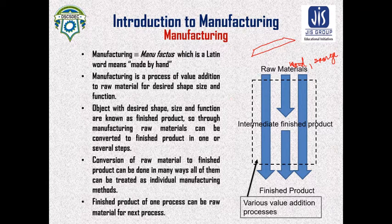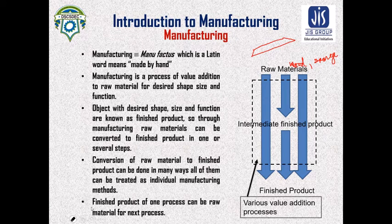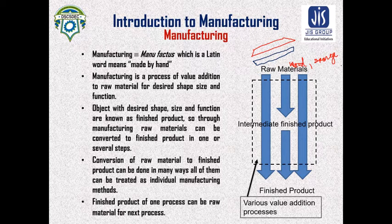This is the wooden part, and this is the spongy part. Both the sponge and wooden parts are first made separately — from wood, the wooden part is made, and from sponge, the spongy part is made. After that, these two are our intermediate finished products.